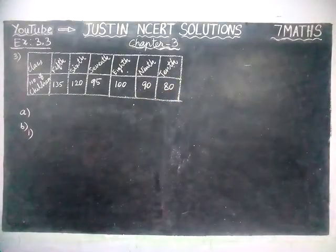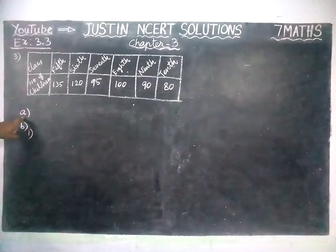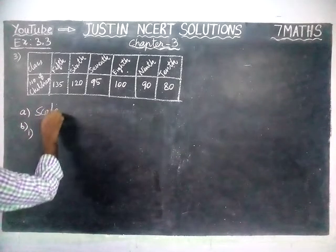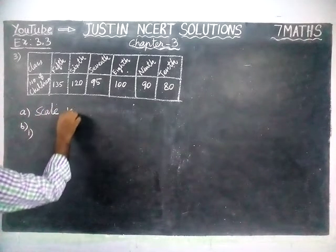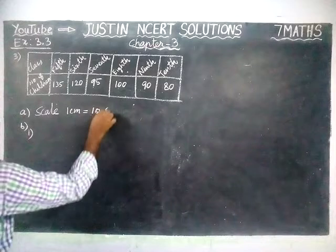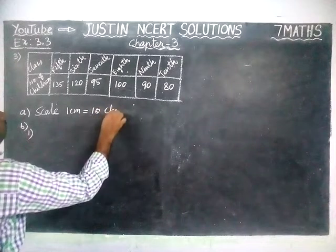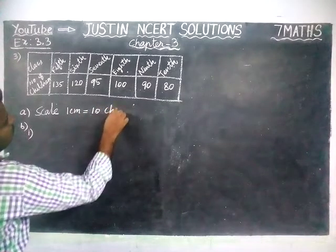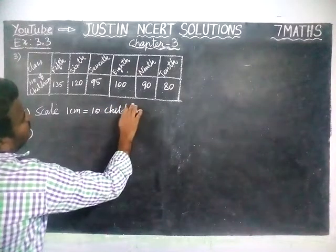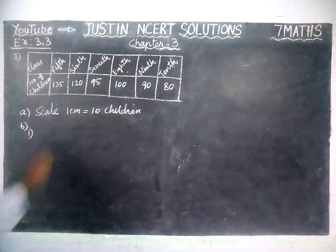Now the first question, option A question is: how would you choose the scale? We are going to take this scale: 1 cm is equal to 10 children.